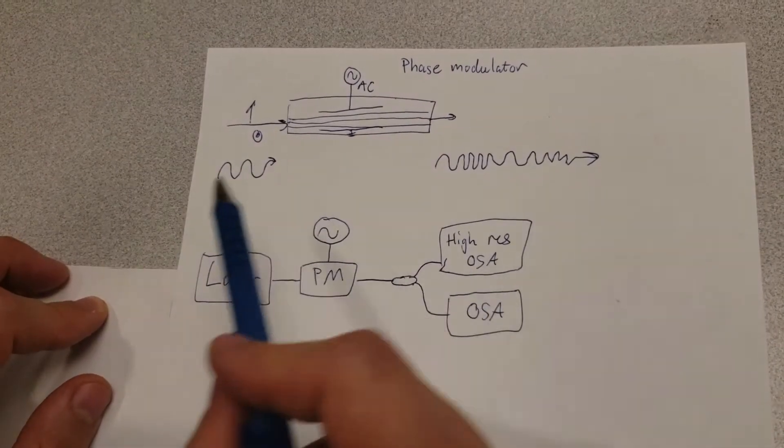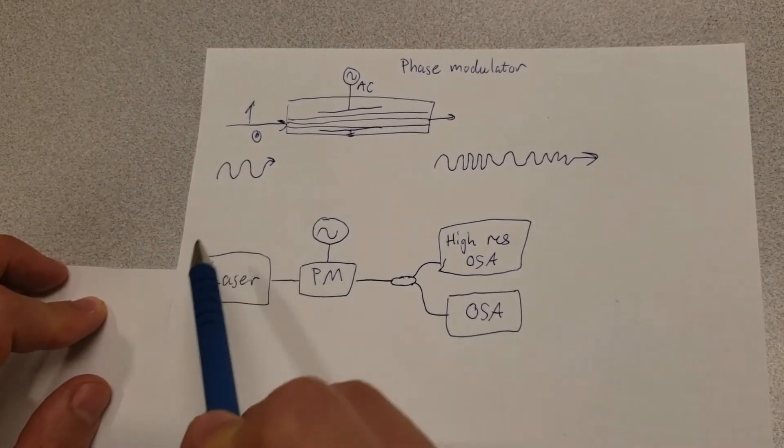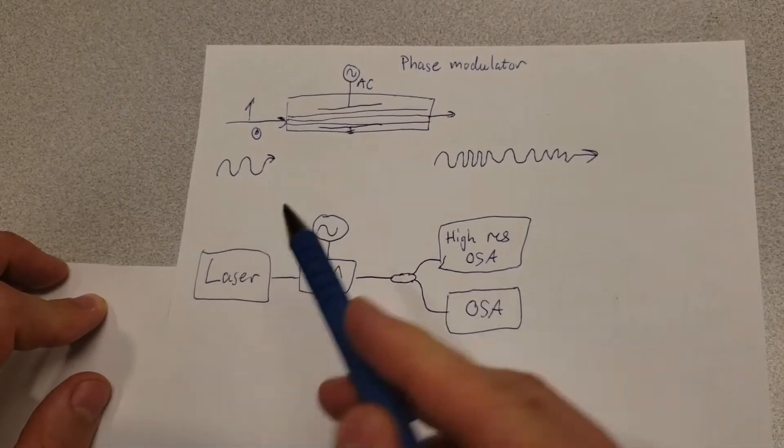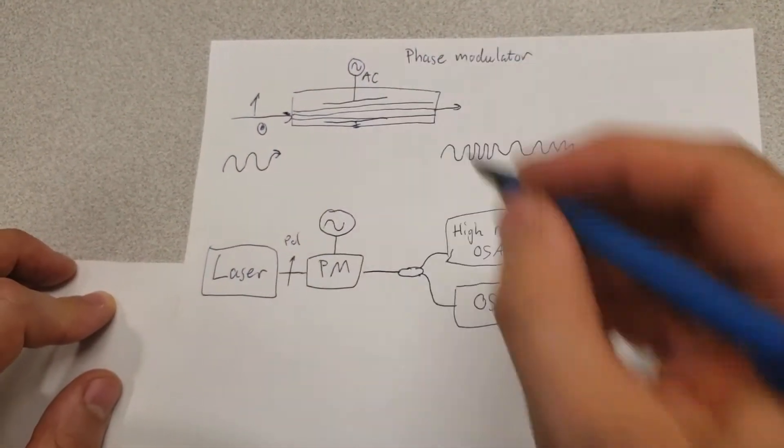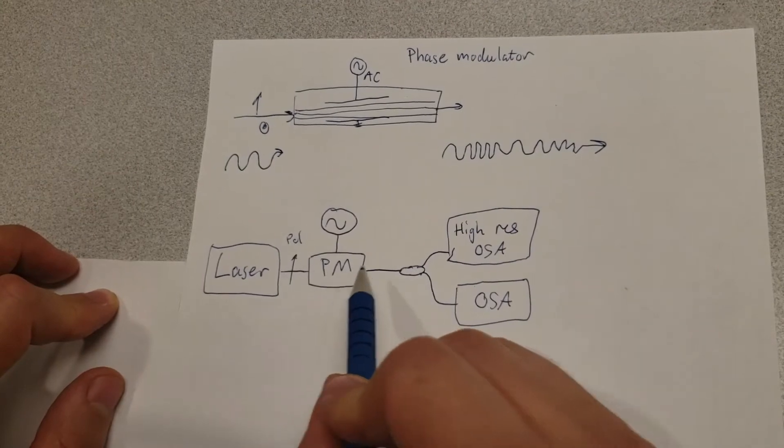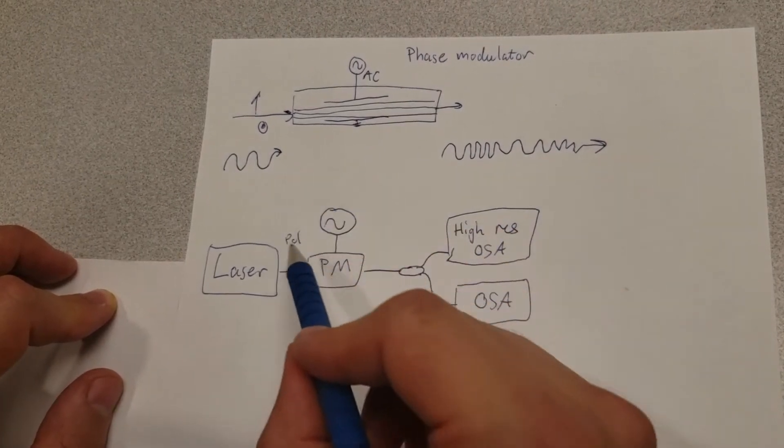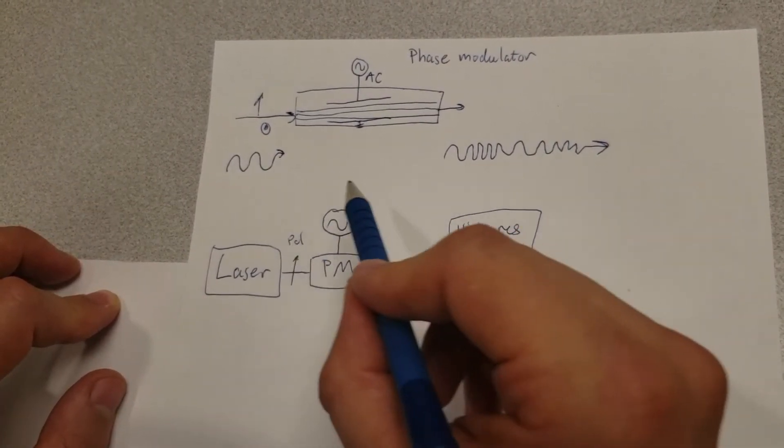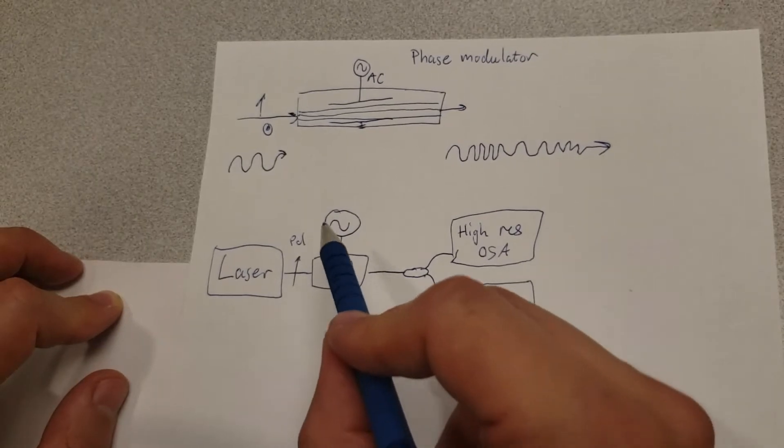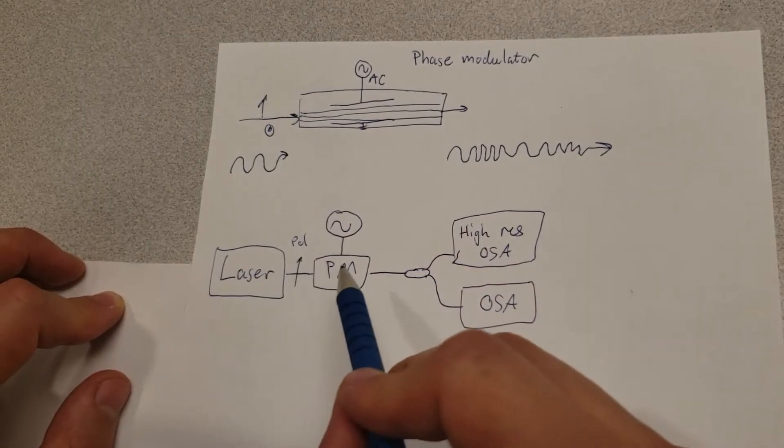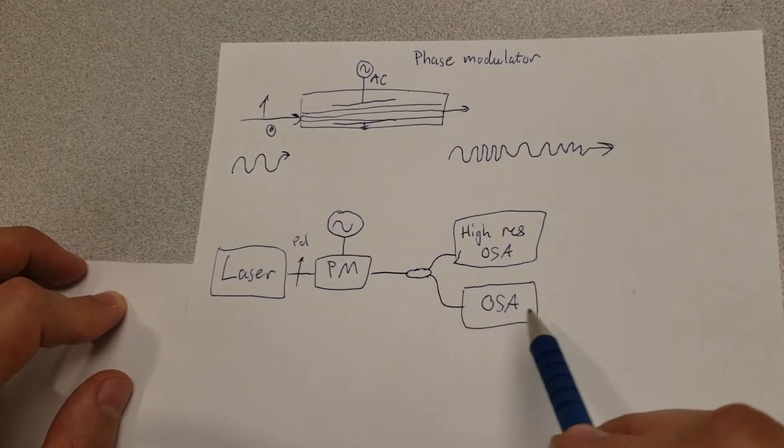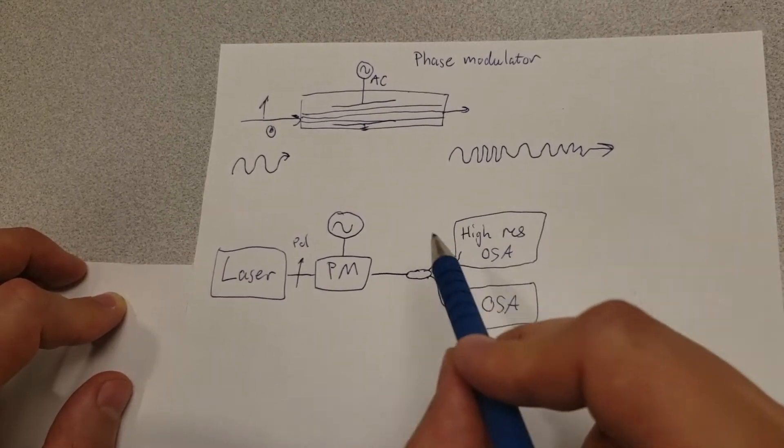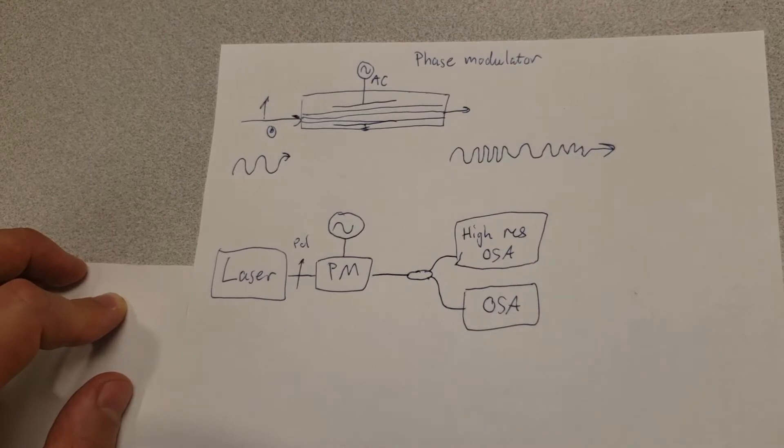So in this little setup I've sketched here, we first have a laser that we want to test, we then have a polarizer here so we clean up the polarization, sent into a phase modulator that's being driven with an external function generator, so it's going to be a sinusoidal phase modulation this one acquires. This then gets sent into both a regular grating-based OSA down here, but also into the high-resolution OSA that we discussed in a previous video. So let's go take a look at that.